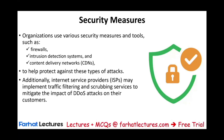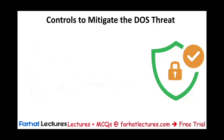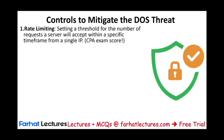Internet service providers may implement traffic filtering and scrubbing services to mitigate the impact on their customers. If they see a large attack, they can slow down or deny access to the network. Another control is rate limiting — setting a threshold for the number of requests a server will accept within a specified time period from a single IP, so you cannot keep logging into a website repeatedly from one IP.